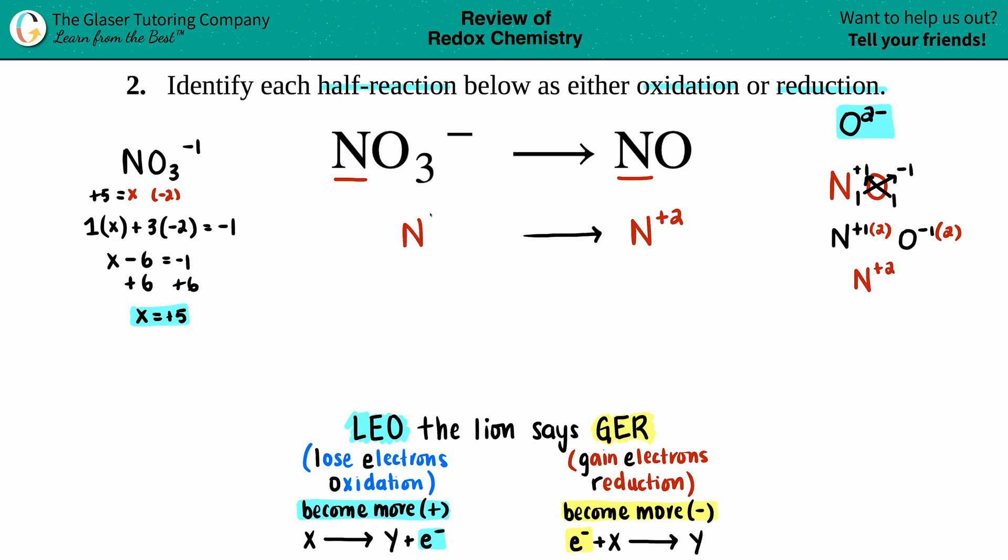N was a plus five. Now we have the charges—maybe I'll bring this over. Now we have the charges to help us out: where is the electrons going to be? Well I have a plus five on this side and I have a plus two. Keep in mind when you add electrons, since they're negative, you can only bring numbers down. You can never go up.